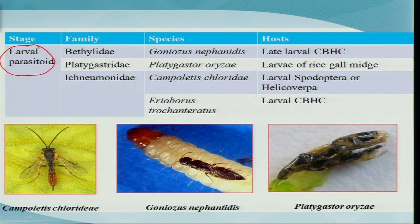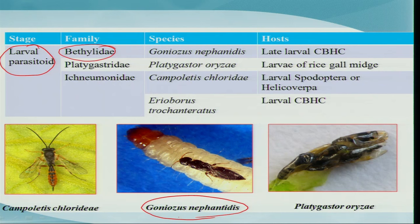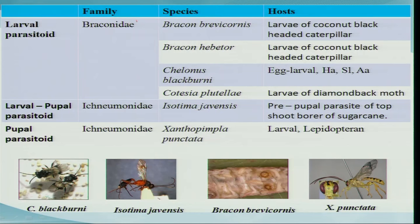The third type is the larval parasitoid, the most common category with a large number of species. They lay eggs on the larval stage, development takes place on the larval stage, and emergence also occurs from the larval stage. Good examples include Bethylidae — Goniozus nephantidis, a serious parasitoid on the coconut black-headed caterpillar — and Campoletis chlorideae under Ichneumonidae, also a larval parasitoid. Braconidae is another quite common larval parasitoid group seen on many insect pests.